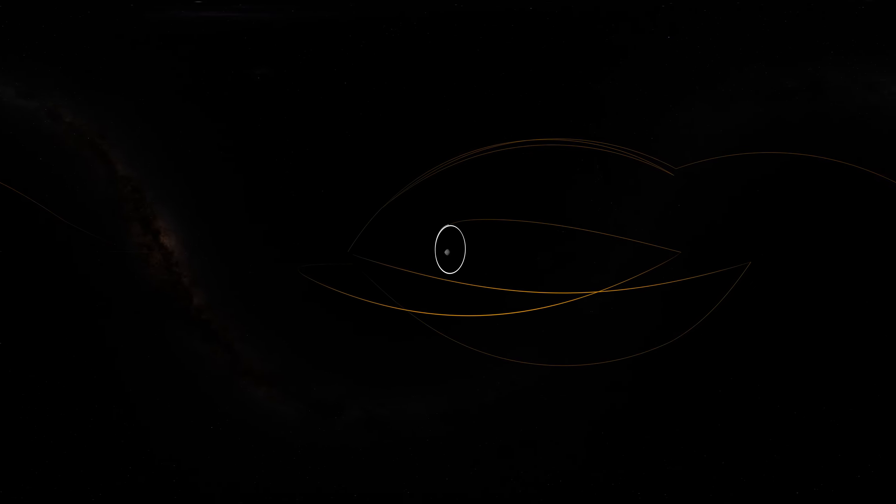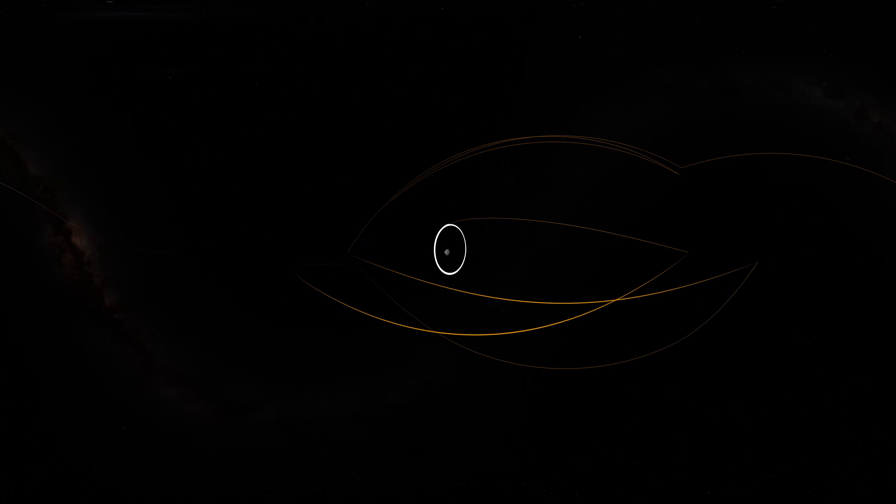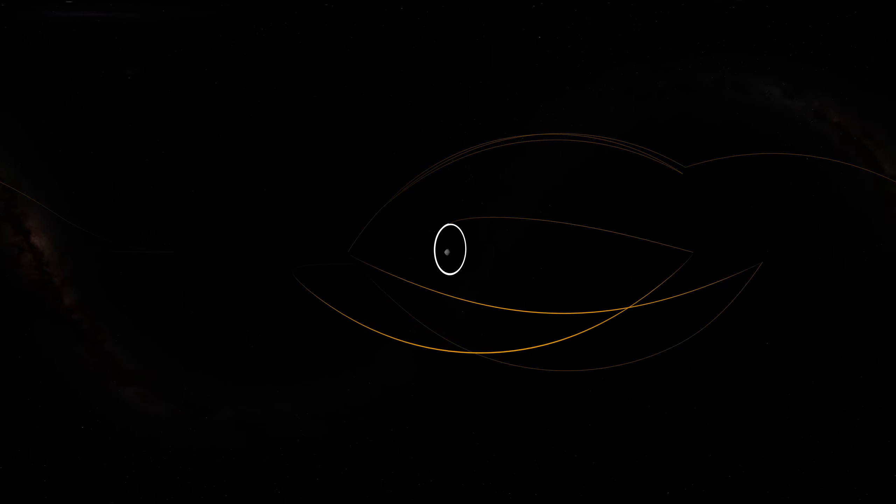On New Year's Eve, OSIRIS-REx was captured into orbit by Bennu's minuscule gravity, making it the smallest world ever to be orbited by a spacecraft.